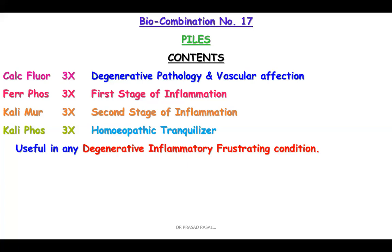For example, a patient comes with cervical spondylosis or lumbar spondylosis associated with varicose veins or hemorrhoids — you can think of Bio-combination 17 instead of 26. So instead of 26, go with 17 because it covers both aspects: degenerative pathology at both levels along with the hemorrhoids or inflamed veins. You have to use your logic at that time.